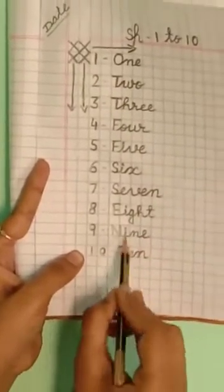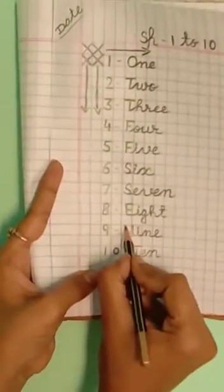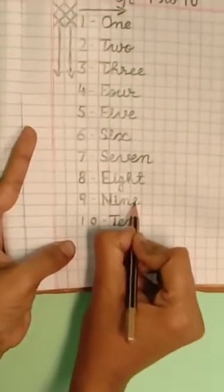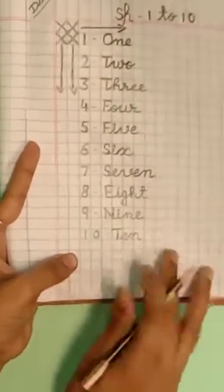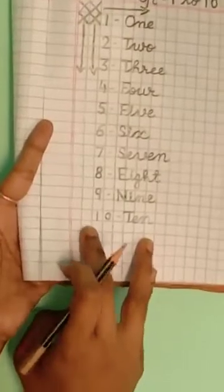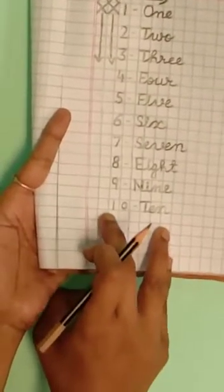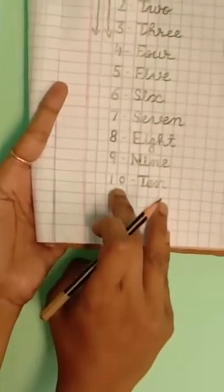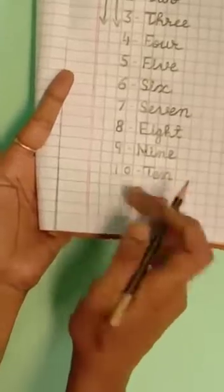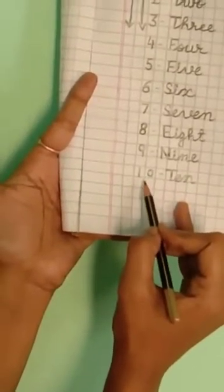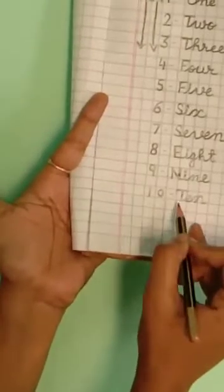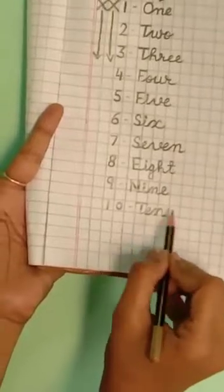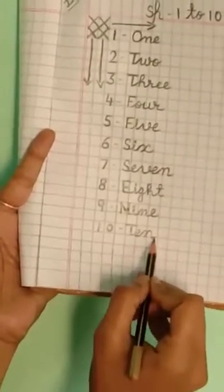Like that. N-I-N-E 9. This is 10, 1-0. 10, 1 is 1 box and 0 is another box. 1-0, 10. Aap log dhyan se suniye, ek box me aap log ek he number likhenge, thik hai. Dusra number ko alag box me likhenge. 1-0, 10, T-E-N 10.